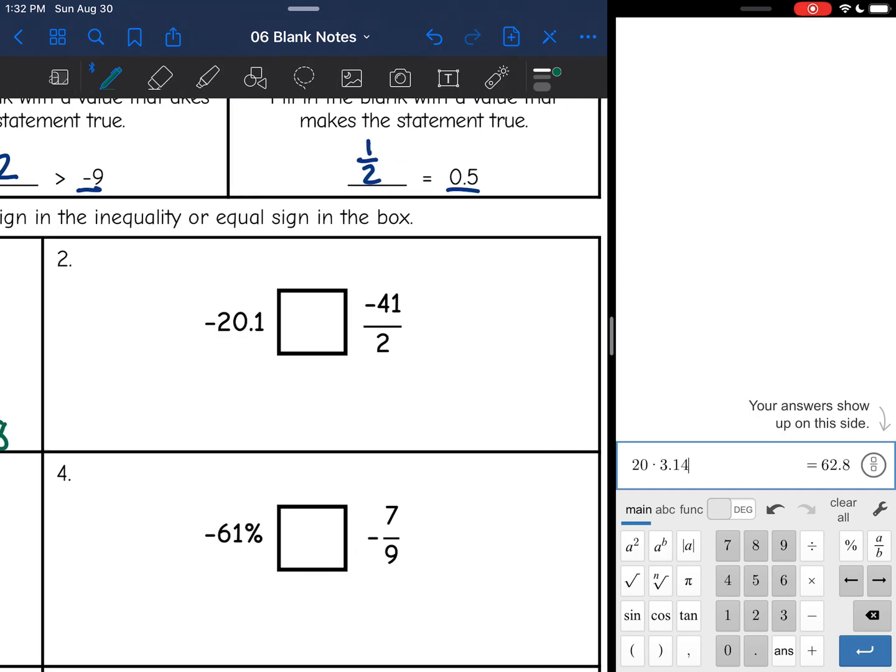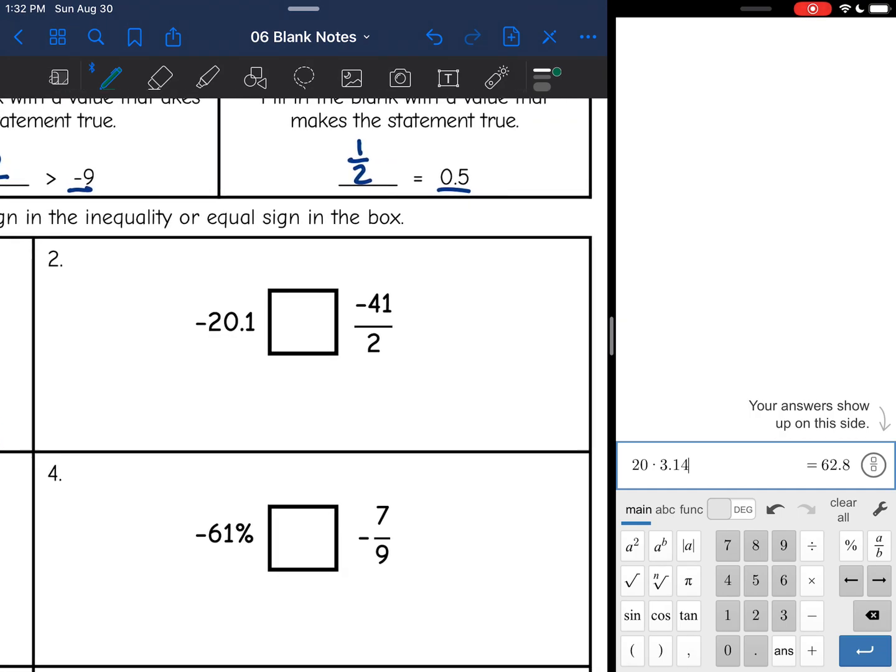Let's look at another one. Negative 20.1, I don't need to change that. It's already in decimal form. Negative 41 divided by 2 though, divided by 2, I get negative 20.5. And remember, negative numbers are a little bit backwards.